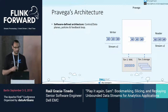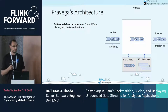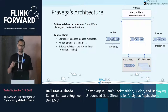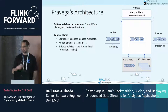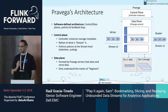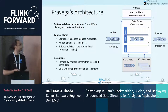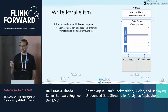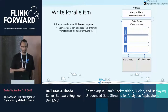Going deeper into Pravega's architecture, Pravega is a software-defined storage system with a control plane, a data plane, policies, and a feedback loop. The control plane manages metadata and knows what the stream is and which segments are part of it. It enforces policies at the stream level such as retention or scaling. The data plane consists of Pravega servers aimed at storing and serving events — Pravega servers only understand segments, not streams. This separation allows multiple open segments for a single stream placed on different machines, enabling write parallelism.